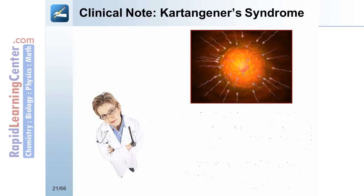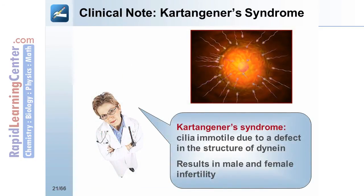On a clinical note, in Kartagener syndrome, cilia are immotile due to a defect in the structure of dynein. This results in male and female infertility — in males, the sperm are not motile. It also causes recurrent sinusitis, as bacteria and other particles are not pushed out, and it is associated with situs inversus.